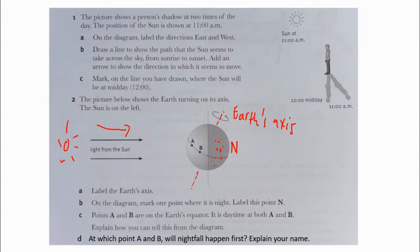Why is the right side night? Because the sunlight travels from the left side and will not be seen by the people or the Earth on the right side.